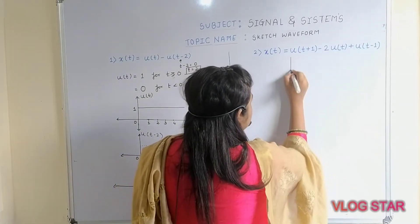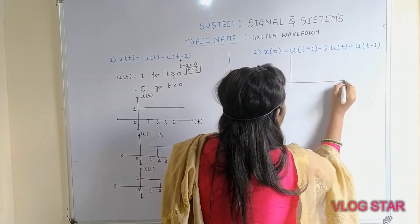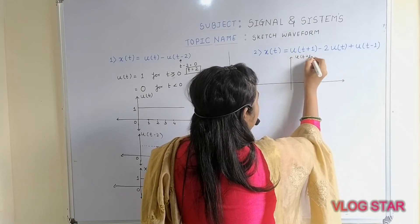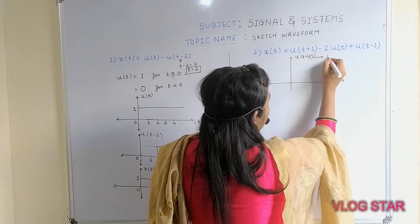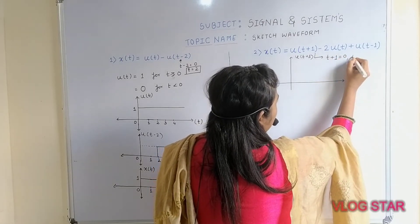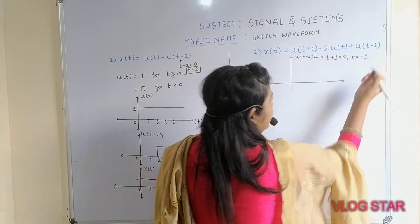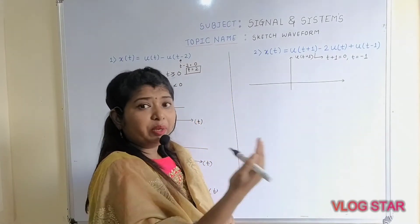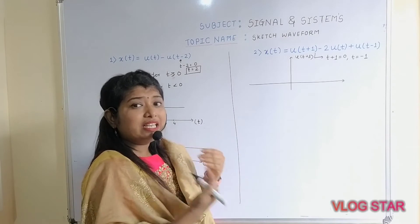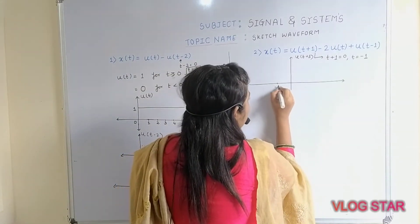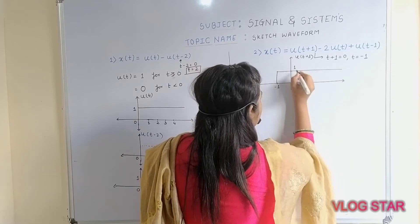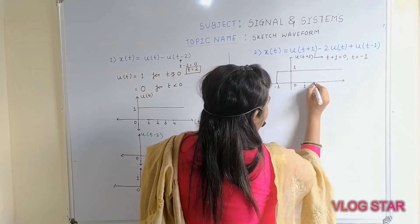Let's draw the first signal, u(t + 1). To draw this signal, put t + 1 = 0, which gives t = −1. This means the unit step signal is shifted towards the left at t = −1. The amplitude here is 1.